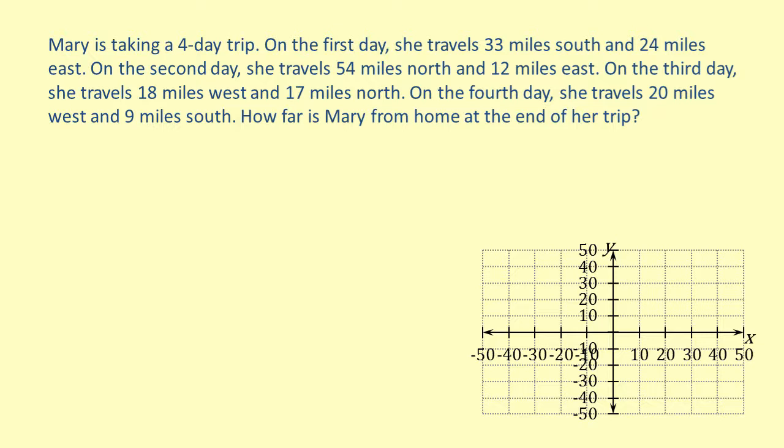We can consider Mary's starting point to be the origin of a graph. We'll let the positive x-direction be east and the positive y-direction be north. So that means the negative x-direction is west and the negative y-direction is south. We also know that Mary went on a four-day trip, which means we need four vectors. With this in mind, let's find our vectors.